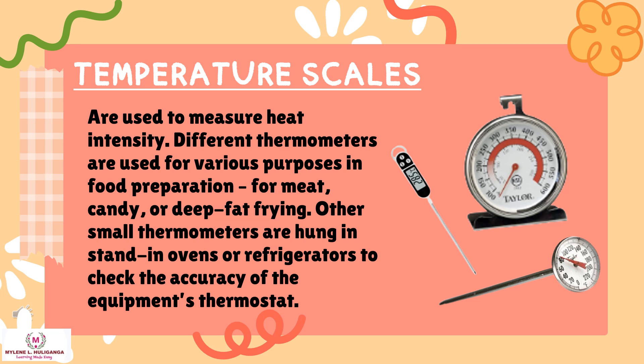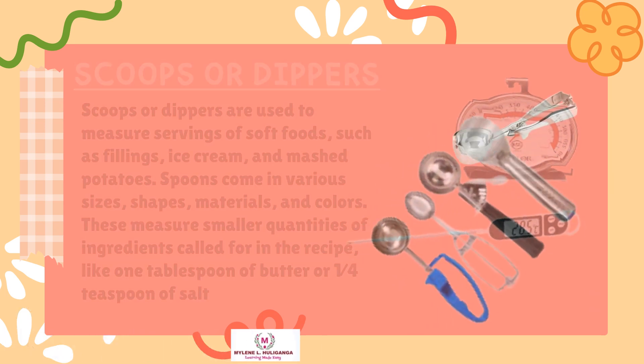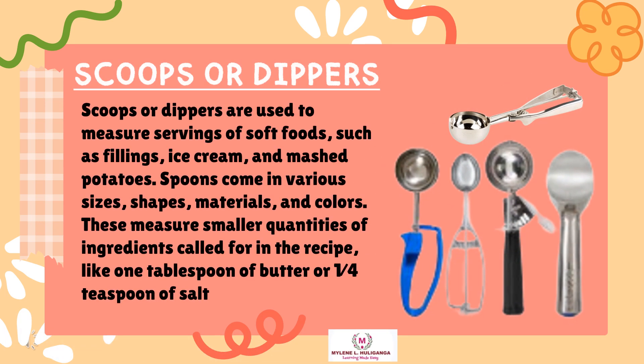Temperature scales are used to measure heat intensity. Different thermometers are used for various purposes in food preparation, such as for meat, candy, or deep fat frying. Small thermometers can also be hung or placed in ovens or refrigerators to check the accuracy of the equipment's thermostat. Scoops or dippers are used to measure servings of soft foods such as fillings, ice cream, and mashed potatoes. Spoons come in various sizes, shapes, materials, and colors, measuring smaller quantities of ingredients called for in a recipe, like one tablespoon of butter or one-quarter teaspoon of salt.